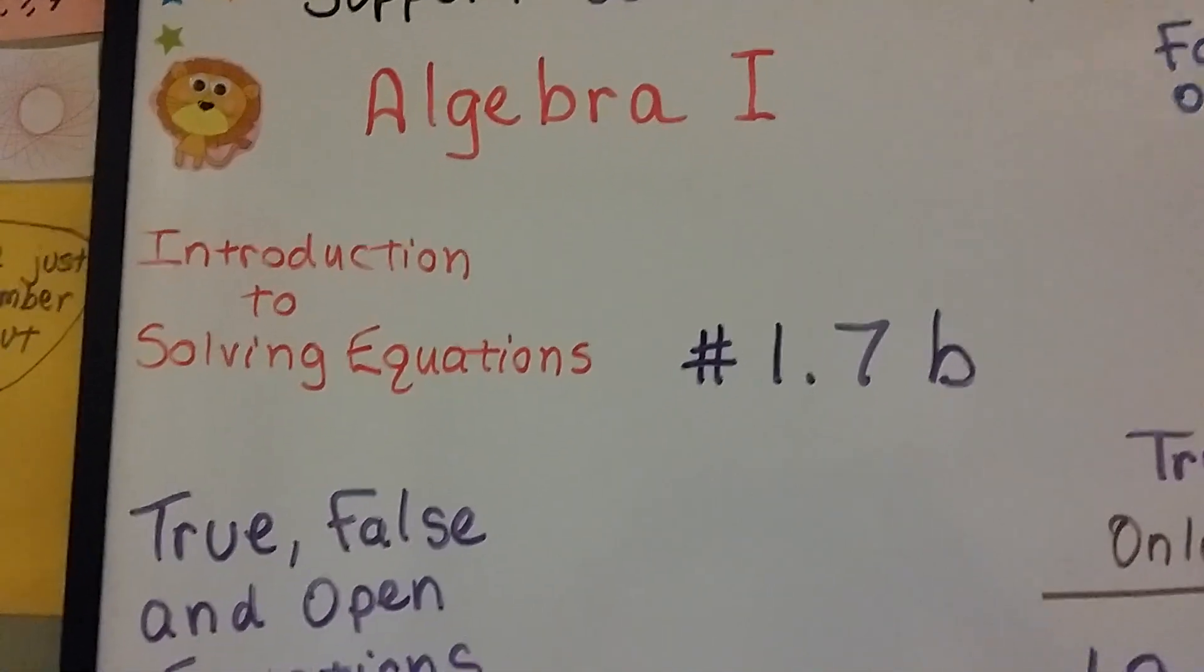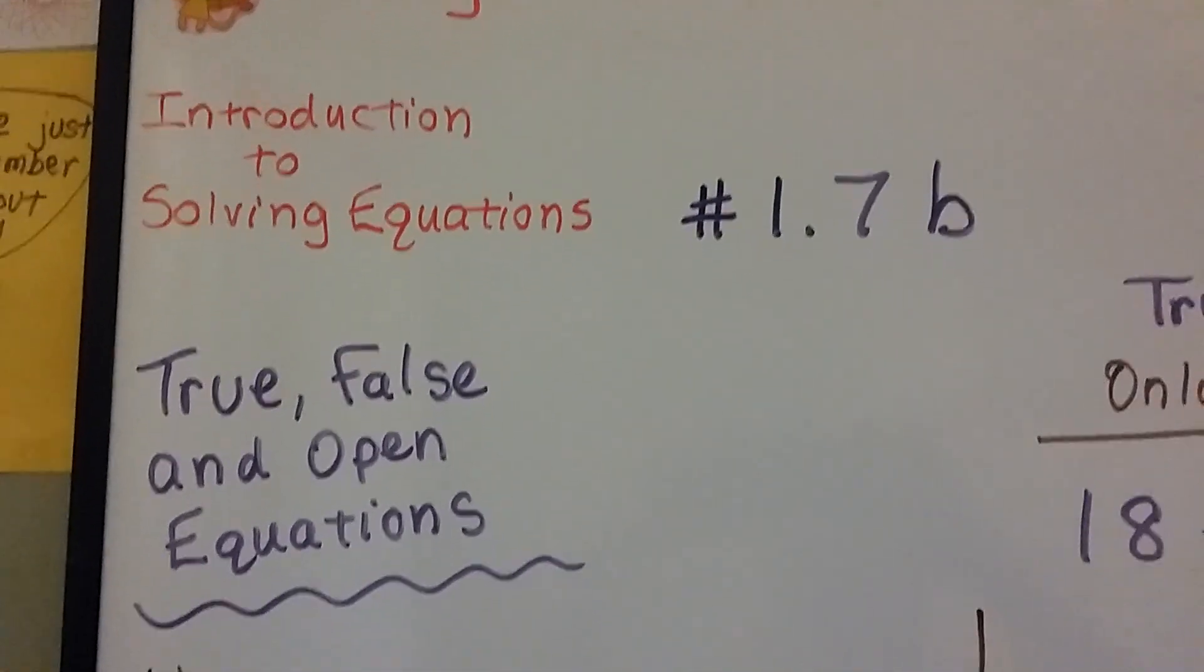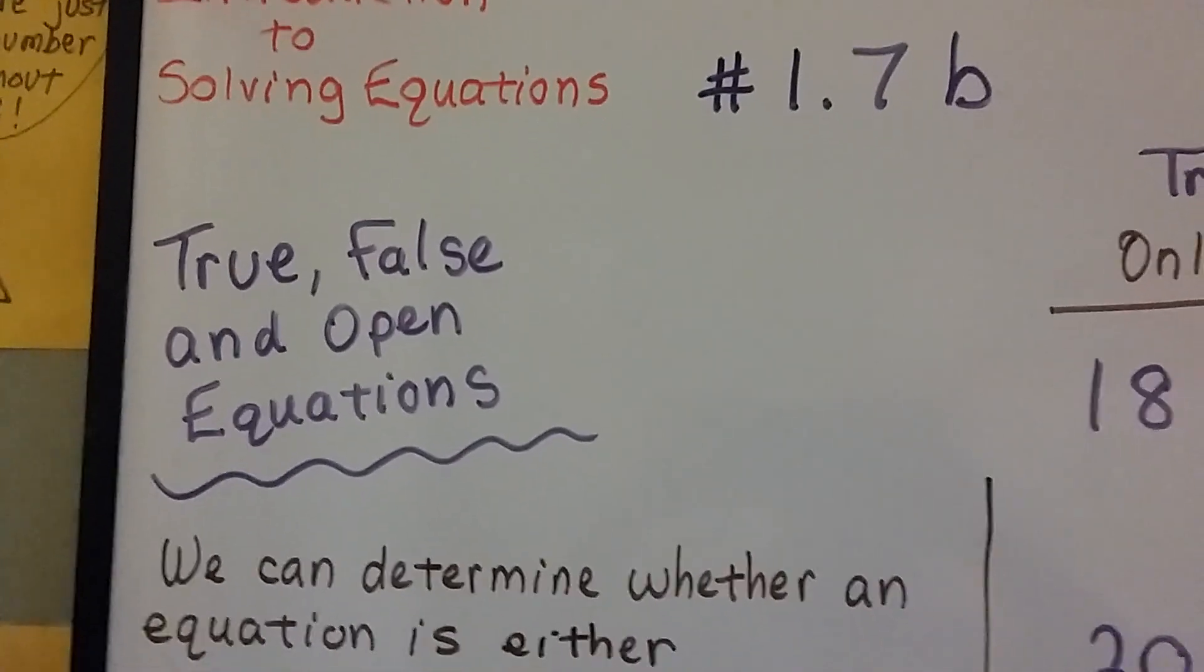Algebra 1, number 1.7b. We're talking about equations, and now we're going to talk about true, false, and open equations.